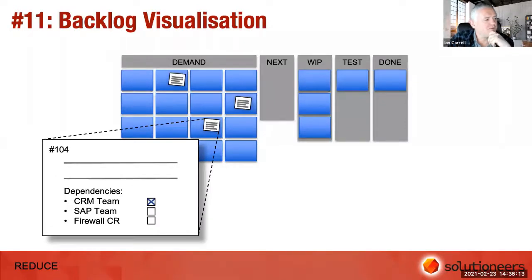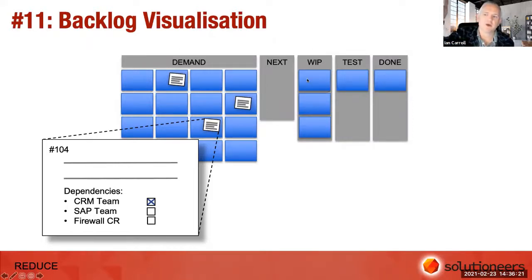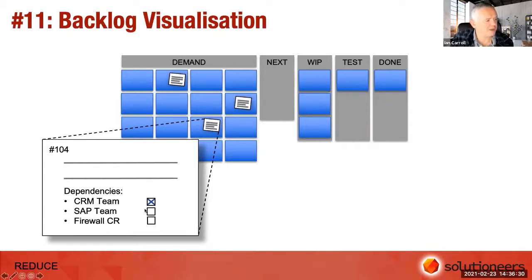Number eleven: backlog visualisation. Quite often teams pull work in, start working on it, and then discover a dependency. With a bit of hindsight, they should have known about that earlier. Using icons or checkboxes on cards in the backlog to show what dependencies need to be resolved before you pull that work into your pipeline — before you start working on it.